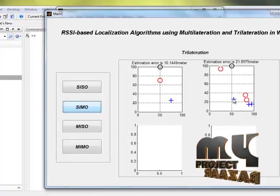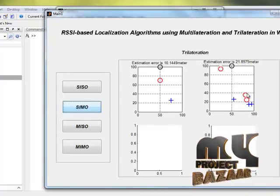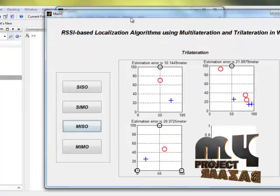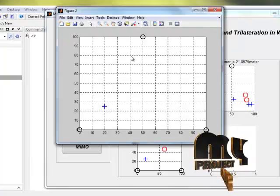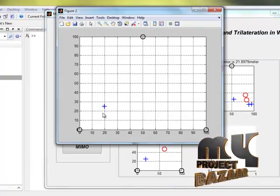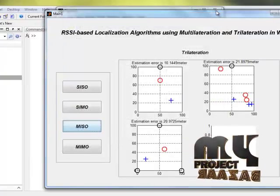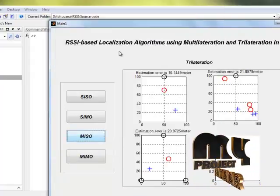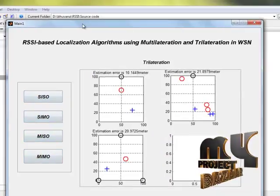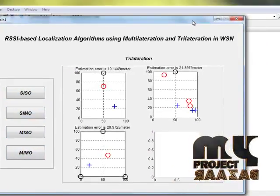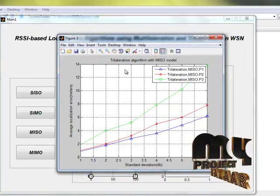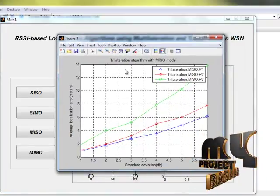This is the anchor node. This is the mobile node. Here the location of the mobile nodes are estimated. Then MISO which means multi input with single output. It is the graph for trilateration with MISO model.